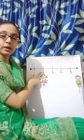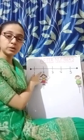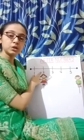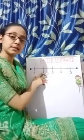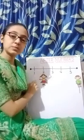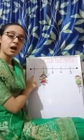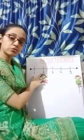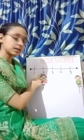Now she will move a step forward. Now children, look at the number at which she is standing. She is standing at number 2. Previously she was at number 1, and now she is at number 2. So what does this mean children? This means that the number that comes after 1 is 2.